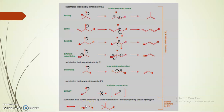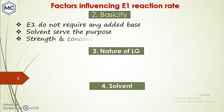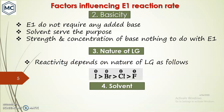The second factor influencing E1 reaction rate is basicity. In E1, the rate of reaction depends only on the substrate — it does not require any added base; the solvent itself can serve the purpose. So in E1 reaction, the rate does not depend on the strength or concentration of the base. The third factor is the nature of the leaving group.